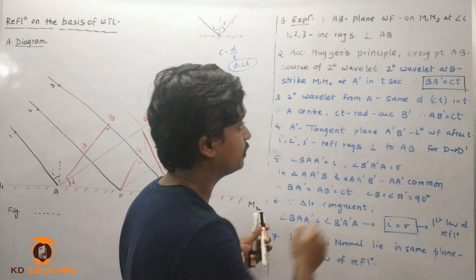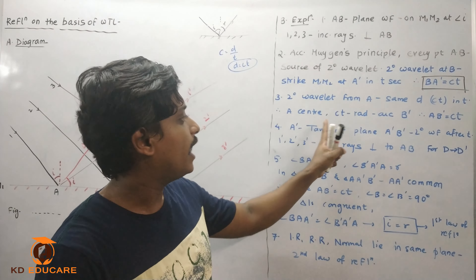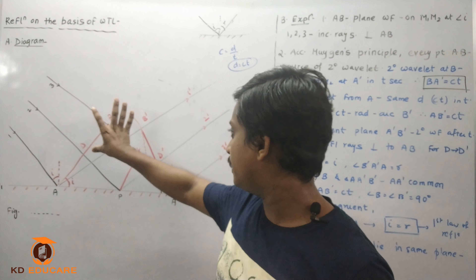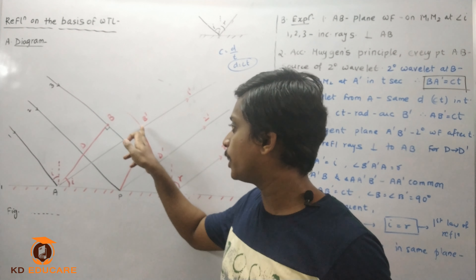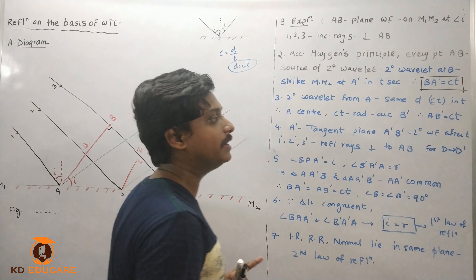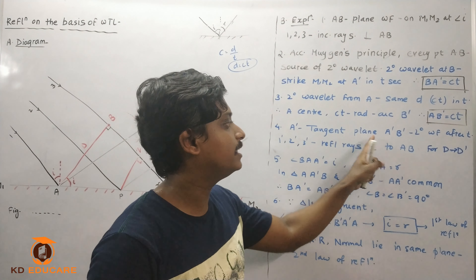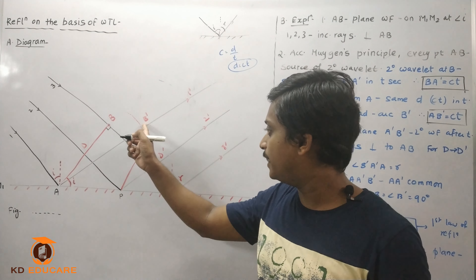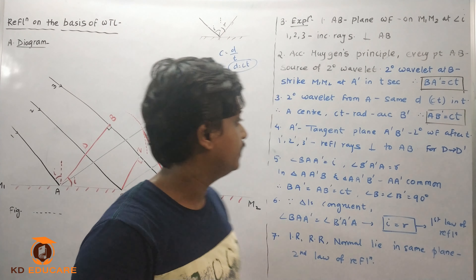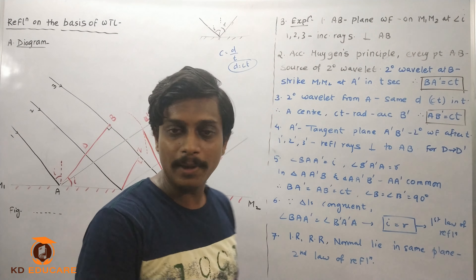The secondary wave from A also covers the same distance CT in time interval T. Taking A as center and CT as radius, draw an arc at B', so that AB' = CT. A' draws the tangent plane A'B'. So A'B' is the reflected wavefront after time T.